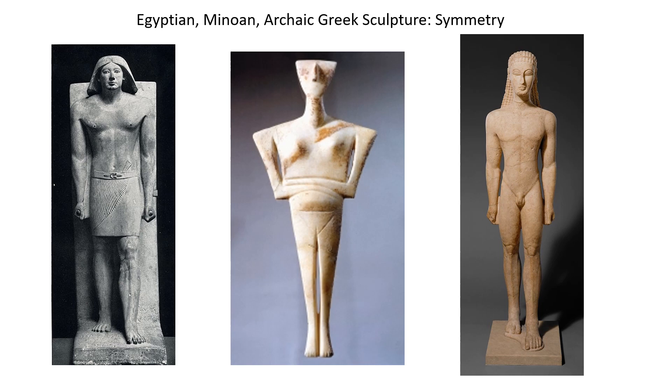Composition is the arrangement of visual elements within the format. The first type of composition we're going to look at is symmetry.